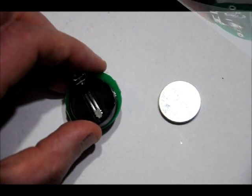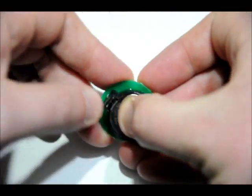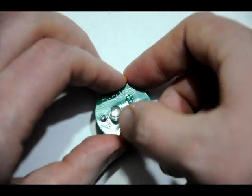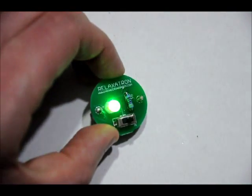Let's give it a try. The battery pops right in. You'll hear it click. Just pop it in. There you go. Turn it around. Turn on the switch and there's your Relaxatron. It changes colors. There you go.